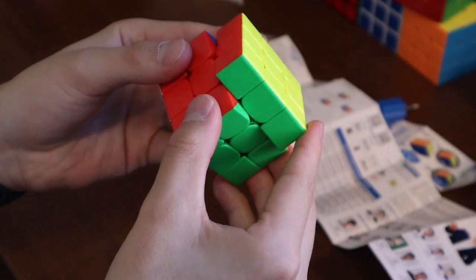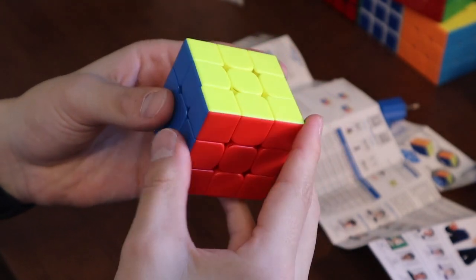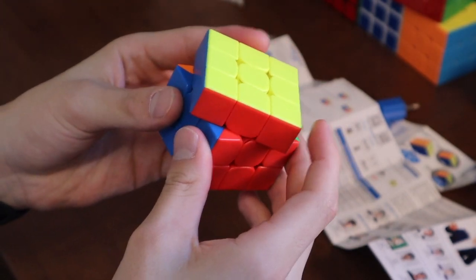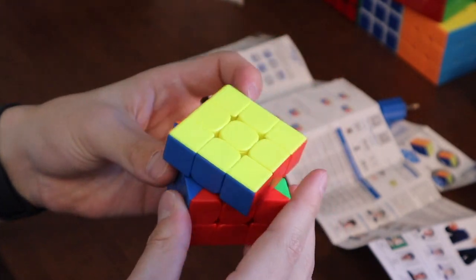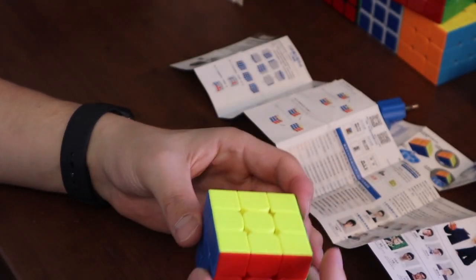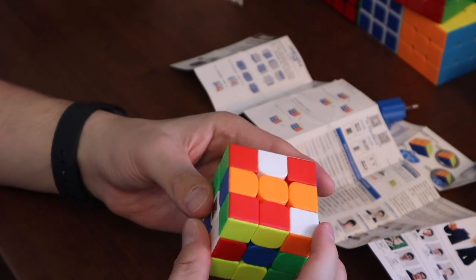The reverse doesn't seem to be too great, but it could be the way that the cube is tensioned, because obviously stock. Yeah, the blue is doing a lot better. Corner cutting looks great. Let's do some solves on it and scramble it up.